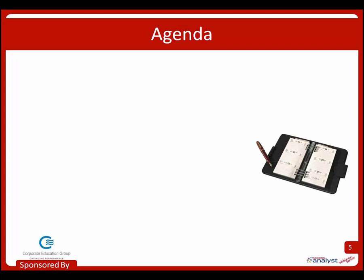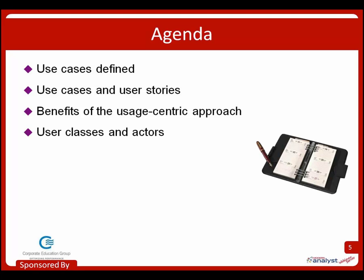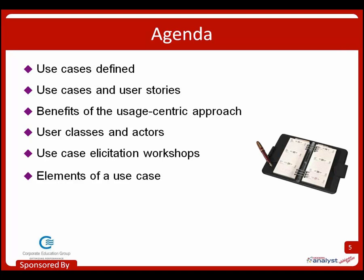Here's what we're going to talk about today. First, I'll give some definitions about what use cases are, and tie in ideas about the popular agile technique of user stories, showing how I see them as connected. Both take a usage-centric approach as opposed to a feature-centric approach, which I think is very powerful. I'll talk about the relationship between user classes and actors, describe my workshop approach, walk through a use case template, and explain the connection between use cases and functional requirements.